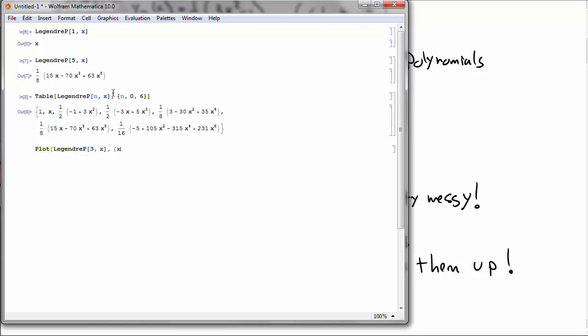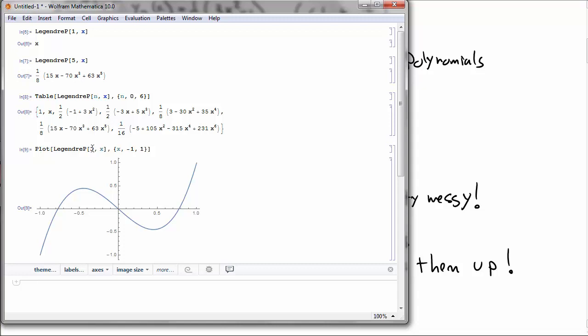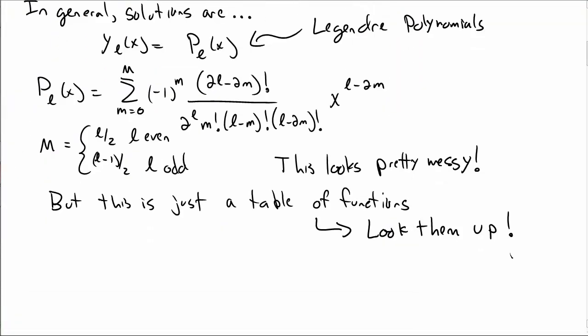Let's plot what the Legendre polynomials look like. Let's say l equal to 3. Looks like that. l equal to 4. Looks like that. And so on. So these polynomials are all well known. You can just look them up in Mathematica or some other way of looking them up.